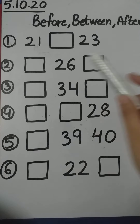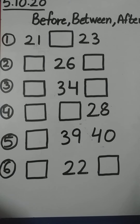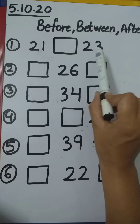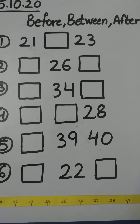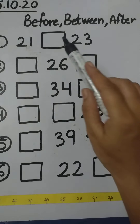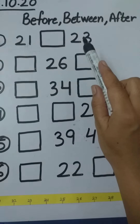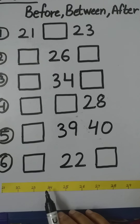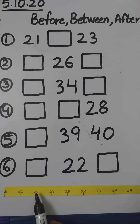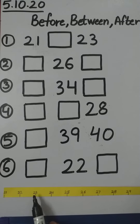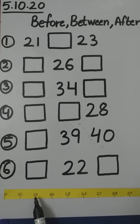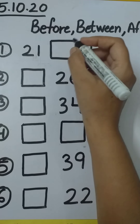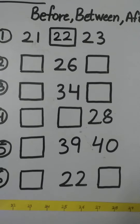So children, I have written some numbers here. First is 21 and 23. Tell me which number comes in between 21 and 23. Let's find out on the number line. So which number comes in between 21 and 23? It's 22. So we have to write here 22.